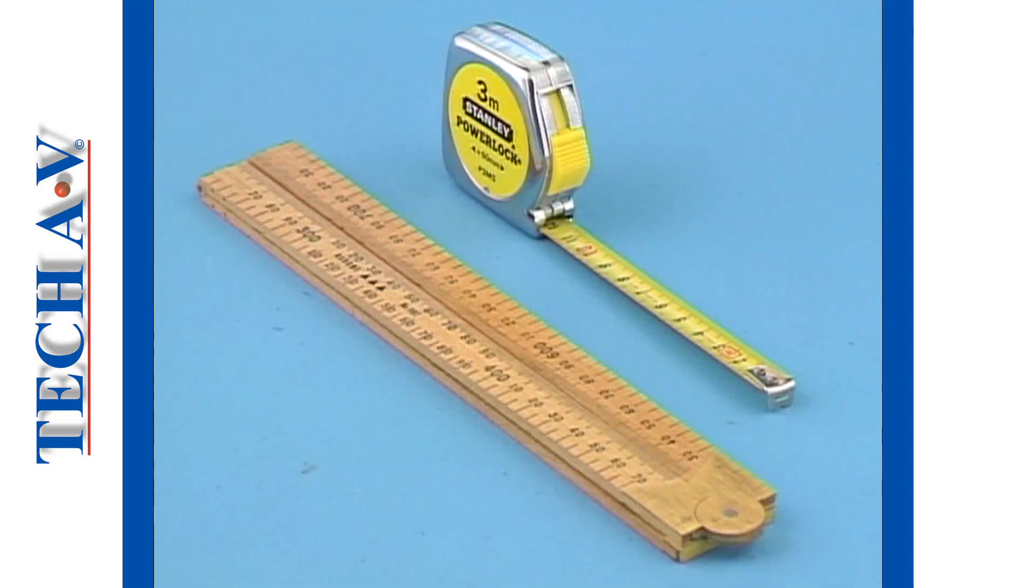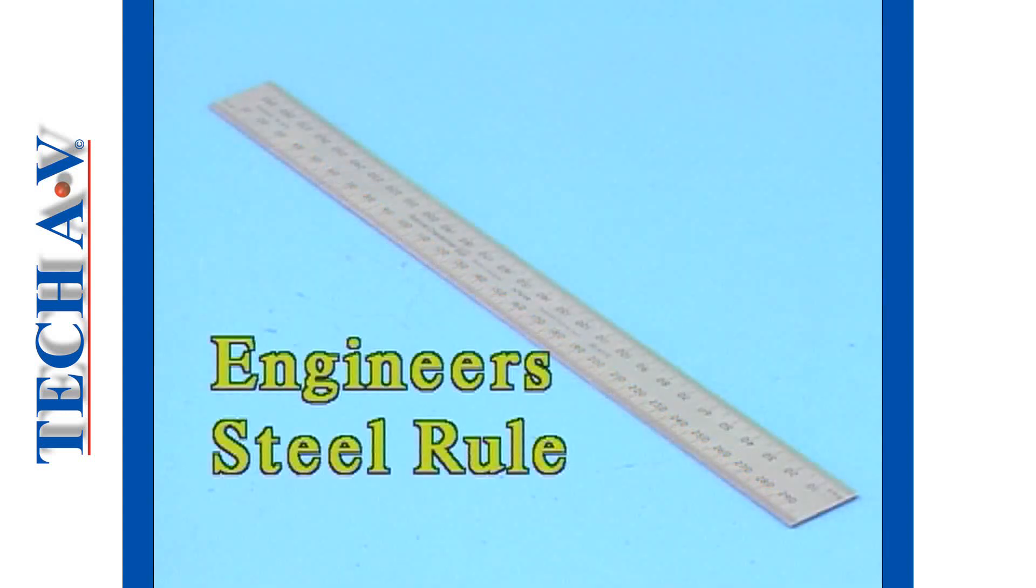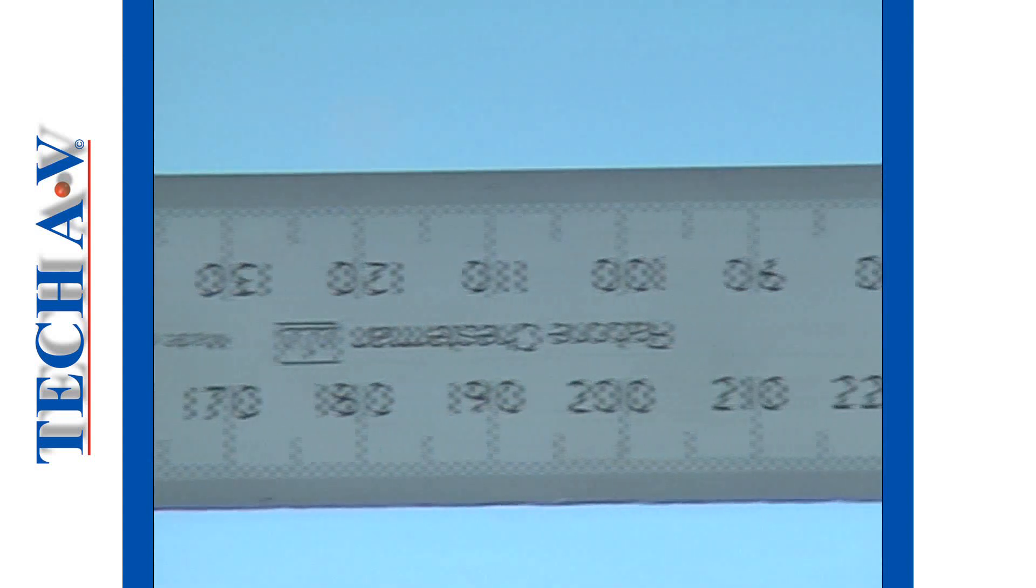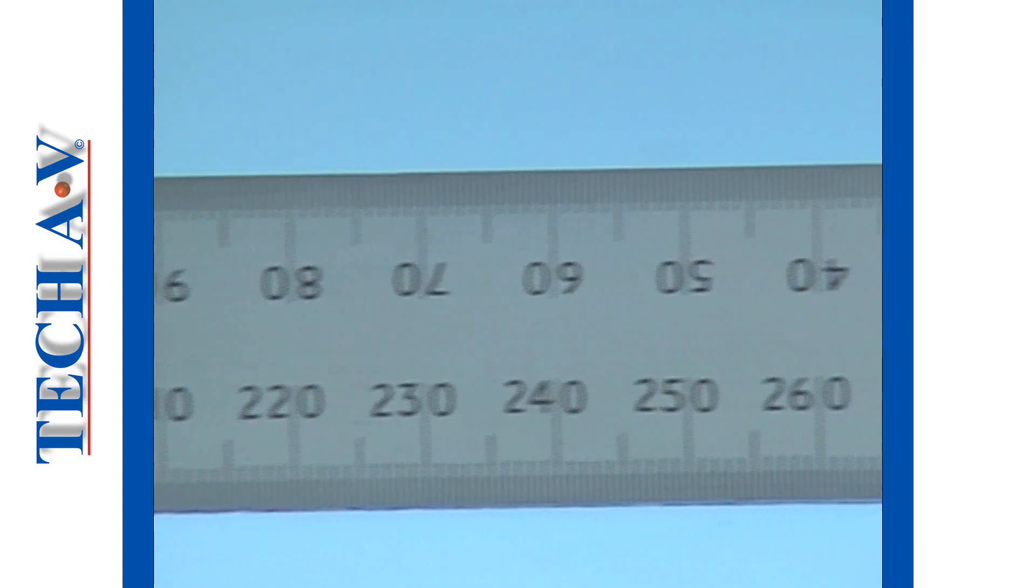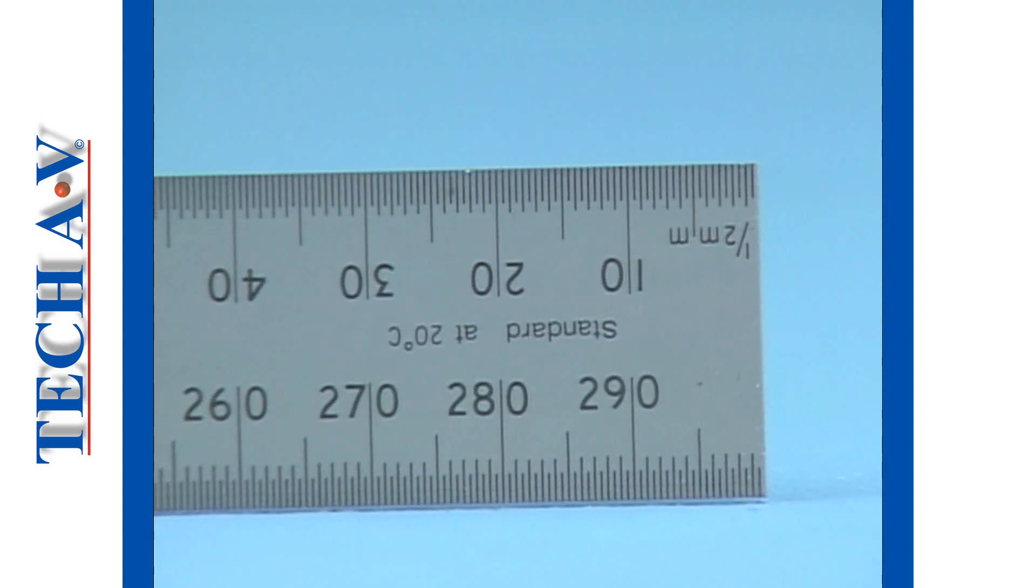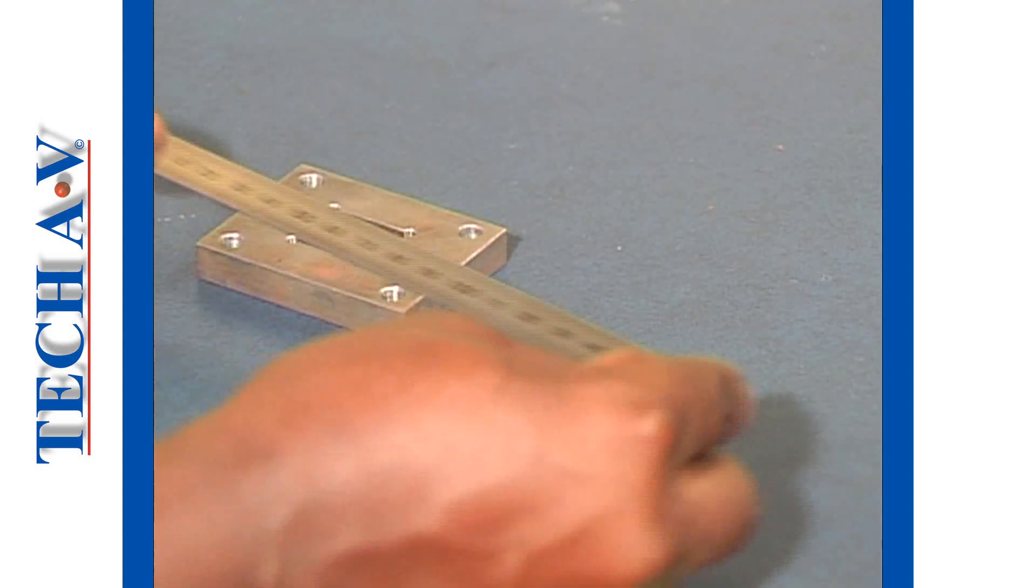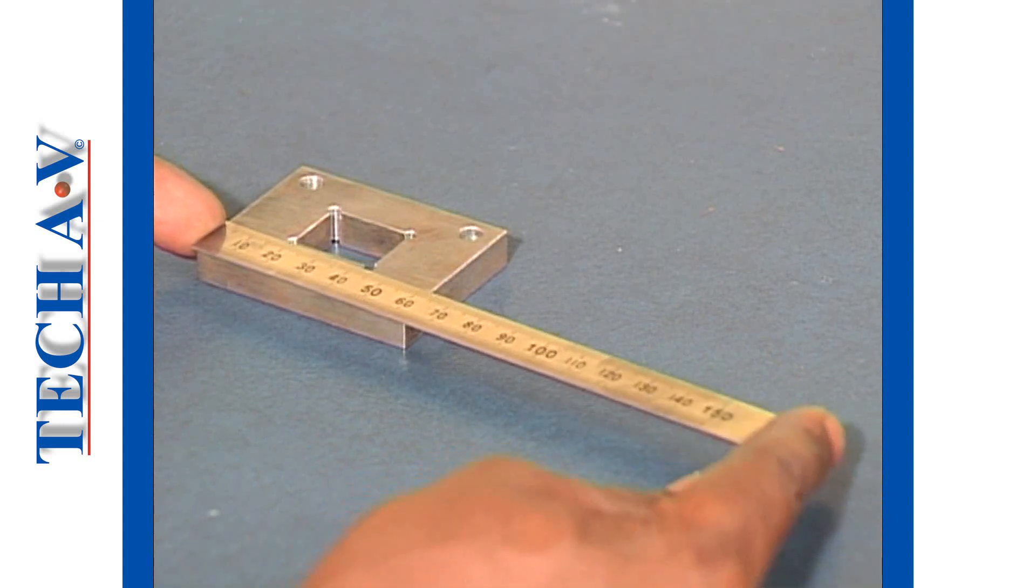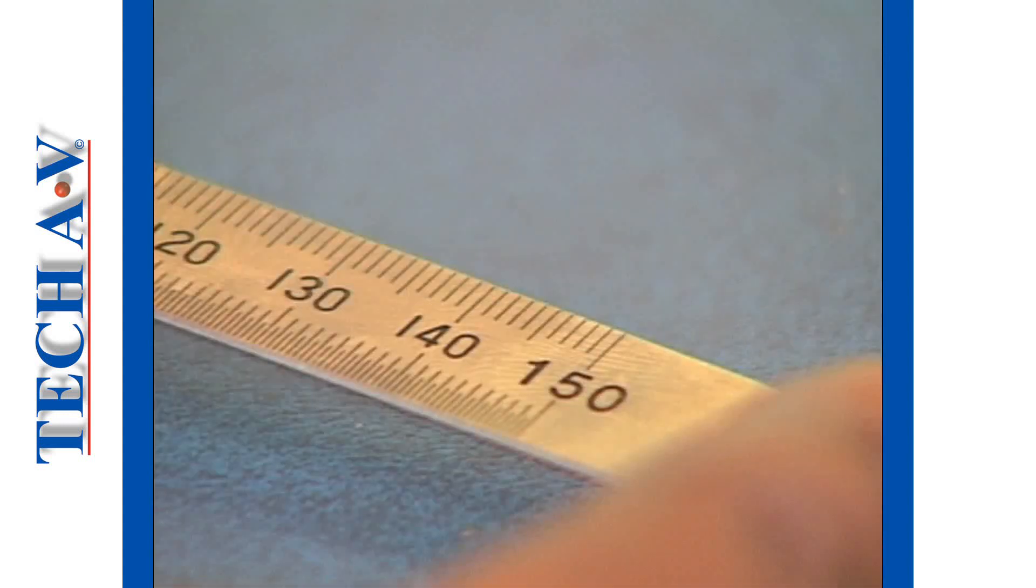We have now looked at two typical measuring instruments and you will often have to use either one of them. The next type of rule you'll often have to use is the steel rule usually known as an engineer's steel rule. Most engineer steel rules are made to be 300 millimeters long. This is the standard rule. Smaller pocket size rules with readings up to 150 millimeters can also be bought.